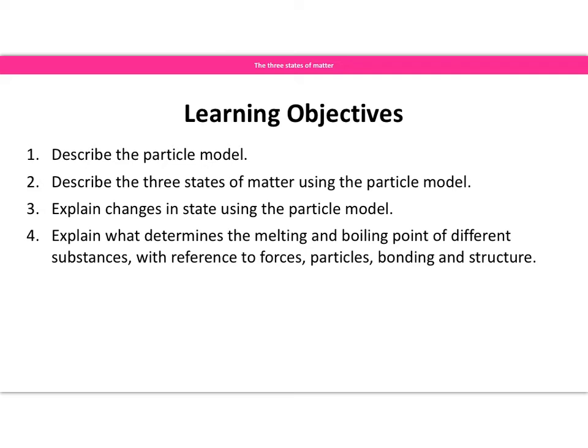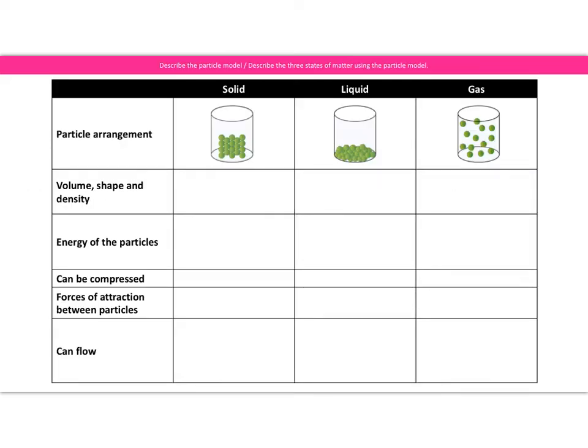There isn't really very much to say initially about the particle model — we're just going to run through it again so that we've got something secure to hold on to when we talk through the rest of the topic. Anything specifically about the particle model in exam questions tends to be of the sort you could do based on your year seven knowledge. We've got a table here for the different states of matter, and we're going to fill it in using terms that tie the particle model in with what we're doing at GCSE.